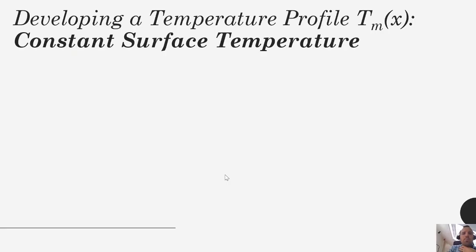So in our last example we derived an energy balance when we had constant surface flux. This time we're going to look at if we have constant surface temperature. So let's just think about this a little bit first.